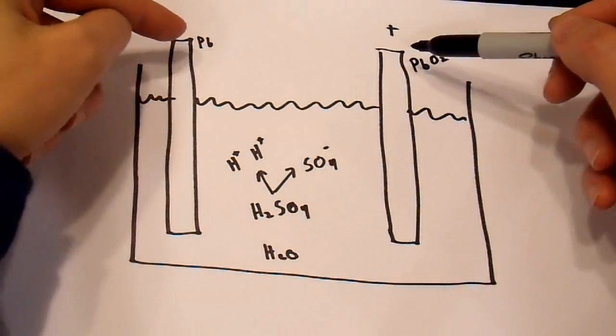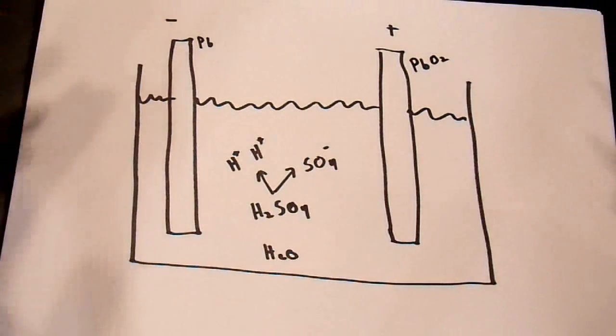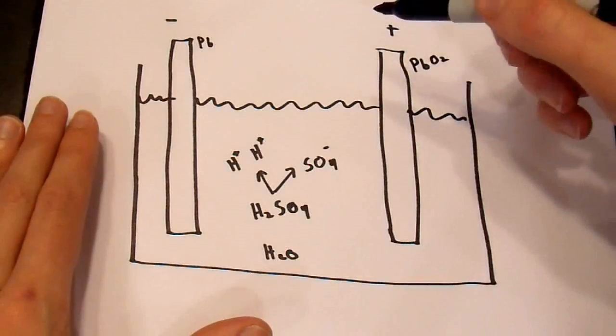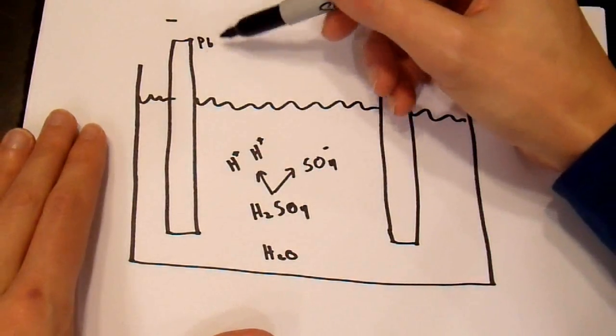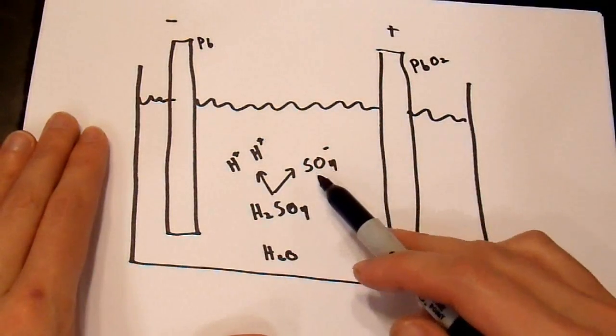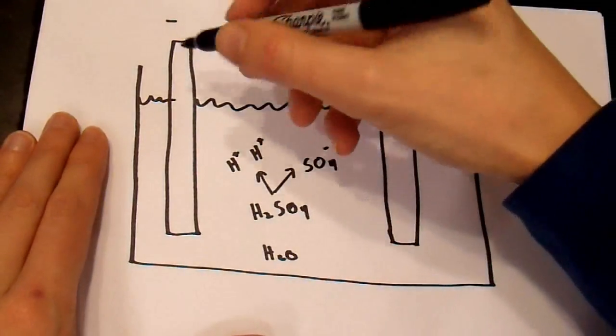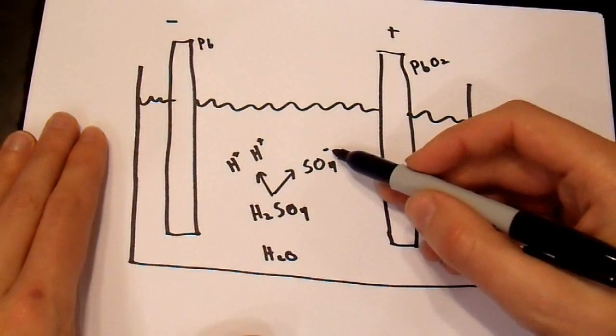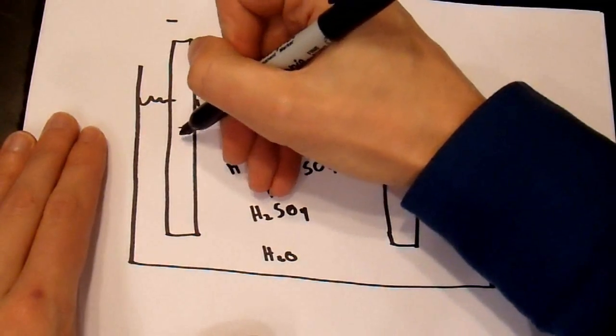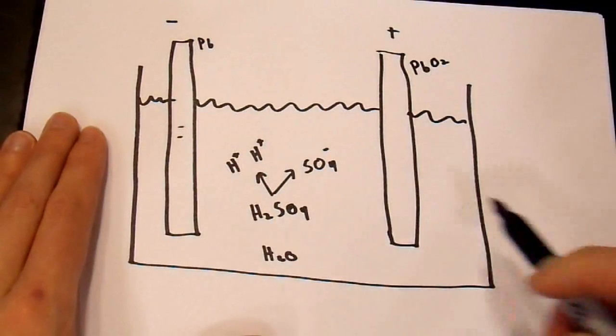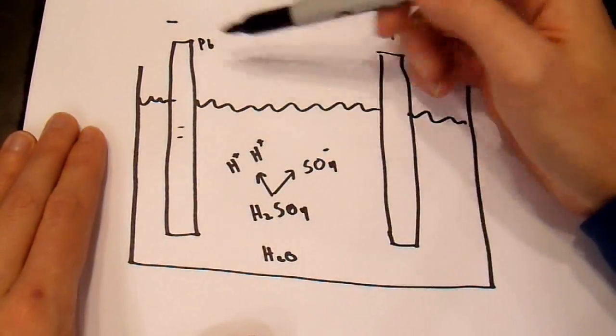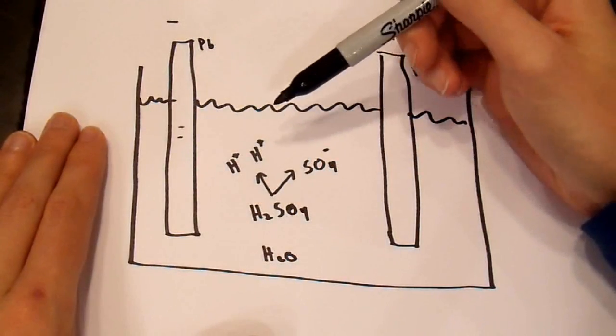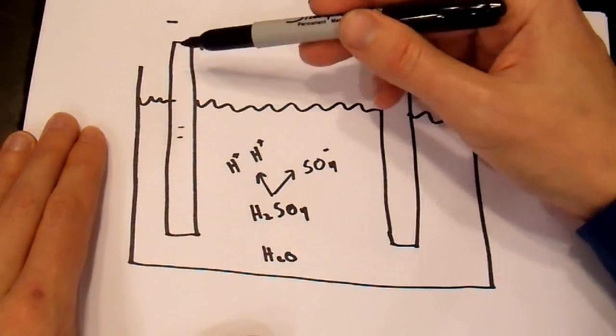what immediately happens in this battery once you disconnect these terminals from a charger is it starts to discharge. And, what it does when it discharges is this lead over here reacts with the SO4 ions. So, you end up with lead sulfate on this terminal, but this is negatively charged. And, you end up with two electrons in the negative terminal every time this reacts. And, now you have lead sulfate on this terminal.